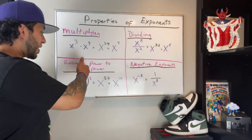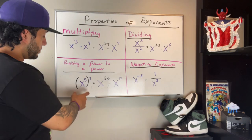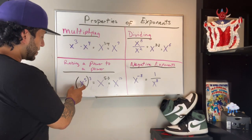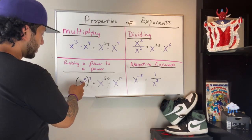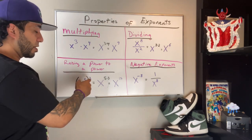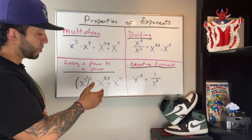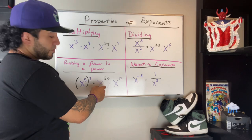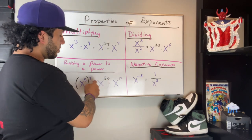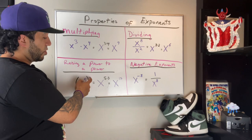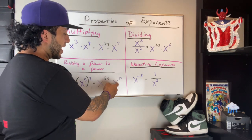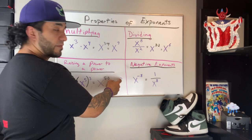What if you're raising a power to a power? So in the parentheses you have x to the fifth power, and outside the parentheses you have the exponent 3. You're going to keep the base of x, and you're going to multiply 5 times 3. We're going to take these two exponents, multiply, which gives us x to the fifteenth power.